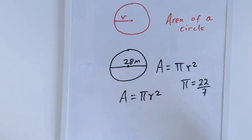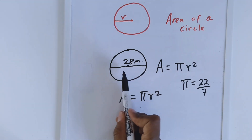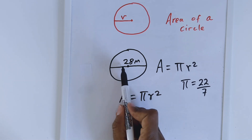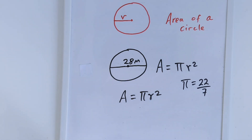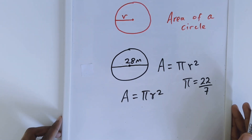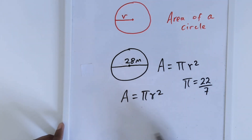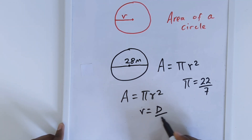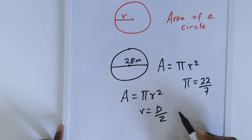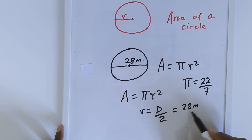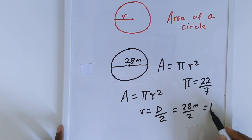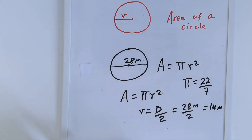Let us do another example where instead of the radius, we are given the diameter of the circle. The first step is, in order to use this formula, you have to find the radius. Radius is equal to the diameter divided by 2. In this case, the diameter is 28 m, divided by 2 will give me 14 m as the radius.